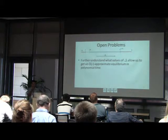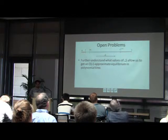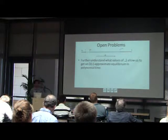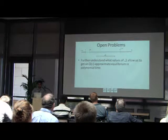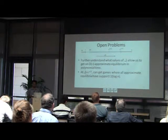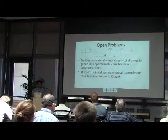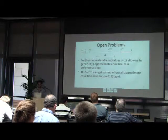I'd like to conclude with some open problems. The obvious one is to fill the gap in the blue region — try to get some result between delta equals 2 epsilon and delta equals epsilon to the one-fourth. The only thing we know is that at delta equals square root of epsilon we start to get non-trivial games: we can construct stable games where all approximate equilibria have large support, at least log n.